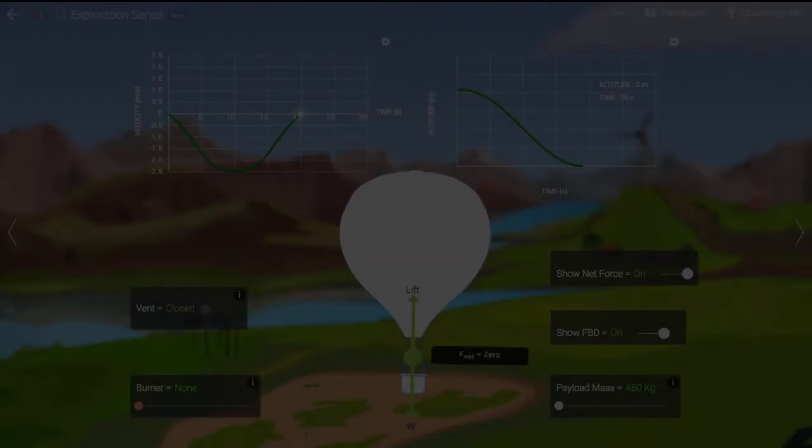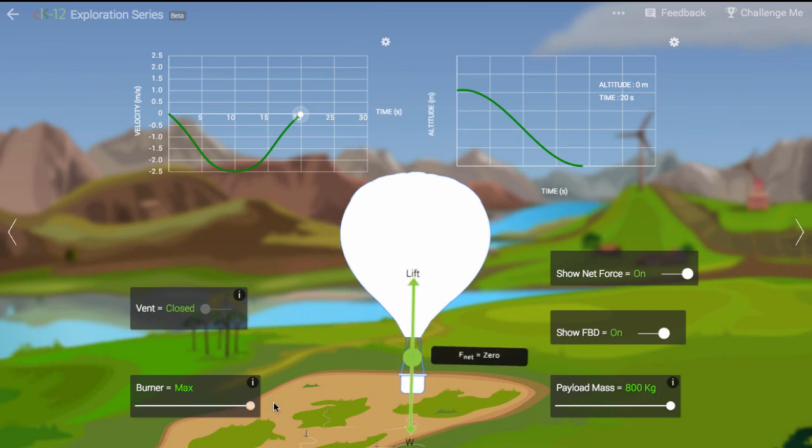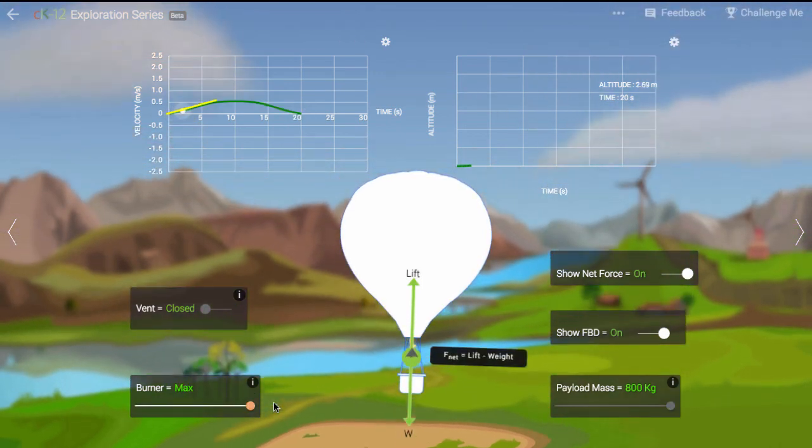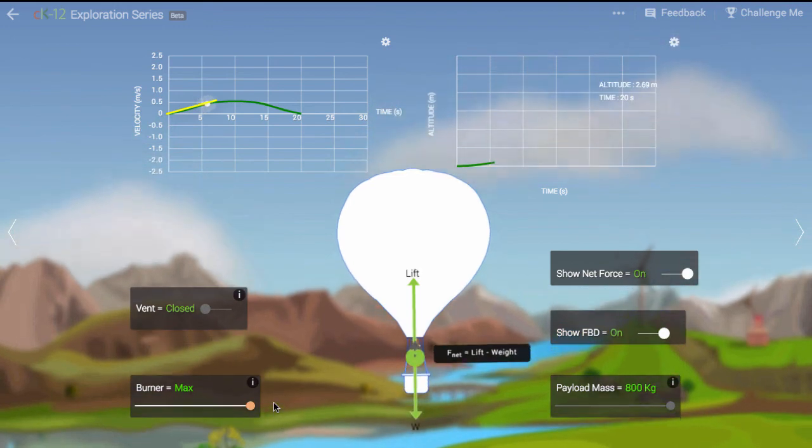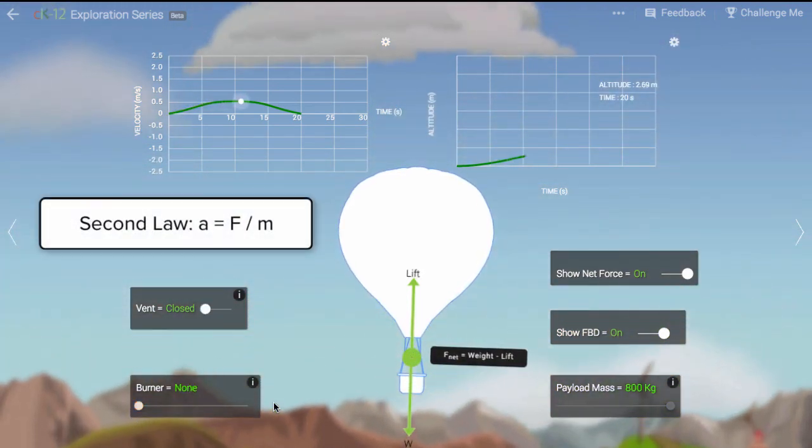Let's watch what happens when we try to take off with a higher payload. See how the slope of the velocity graph is smaller, and the maximum speed we reach is therefore smaller as well. This is a consequence of Newton's second law.